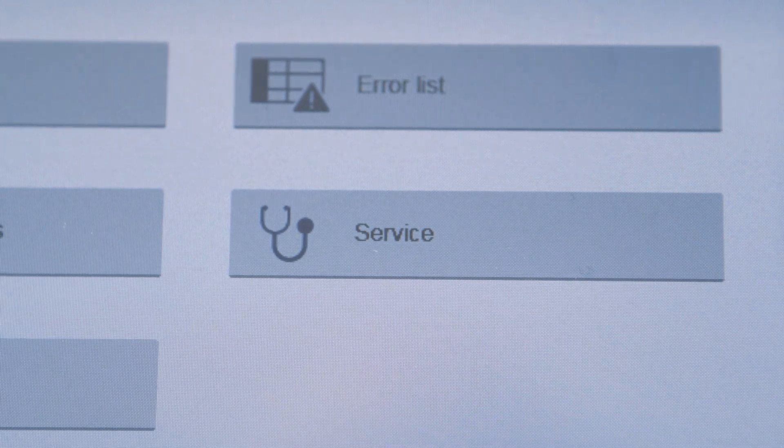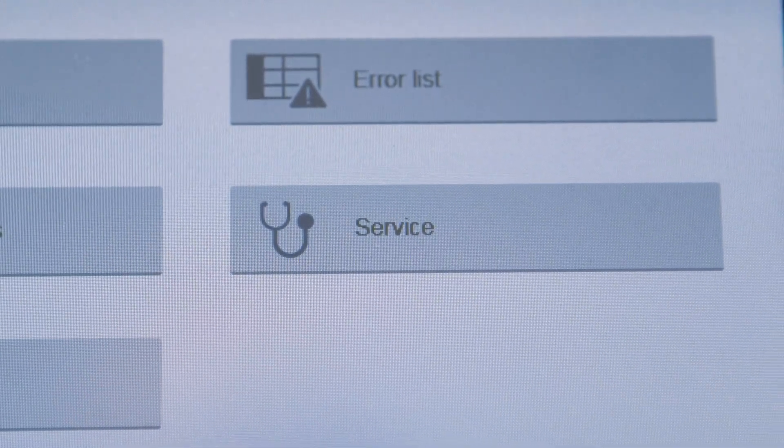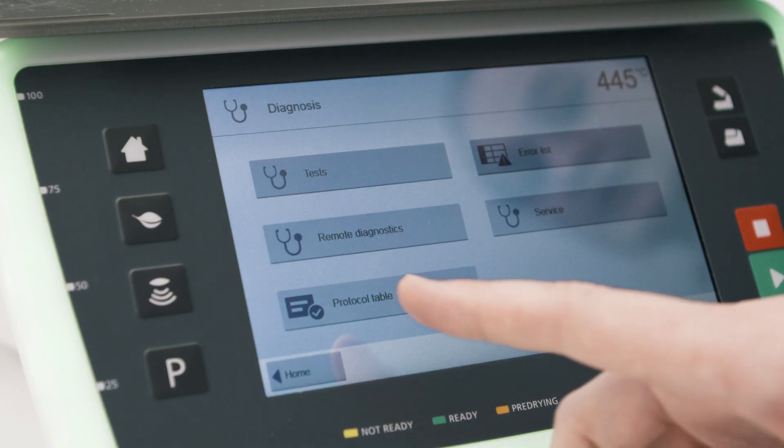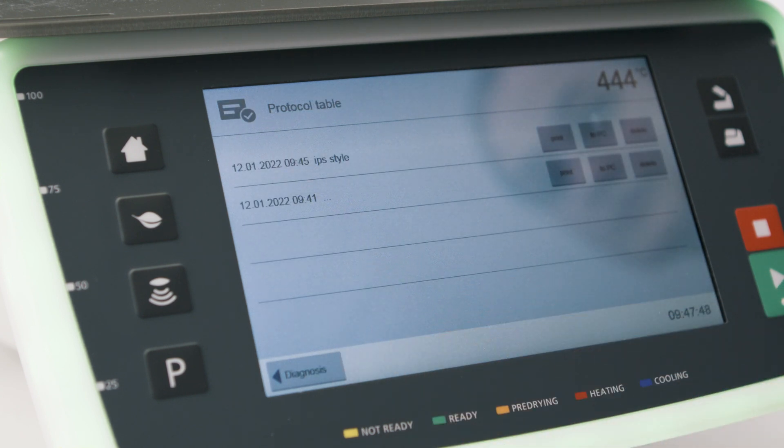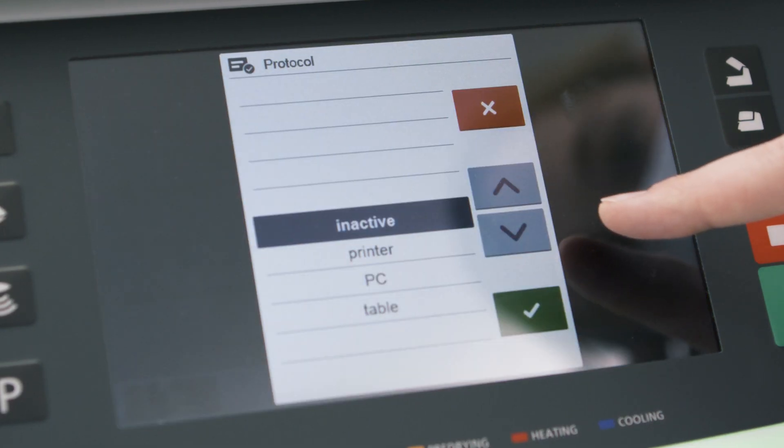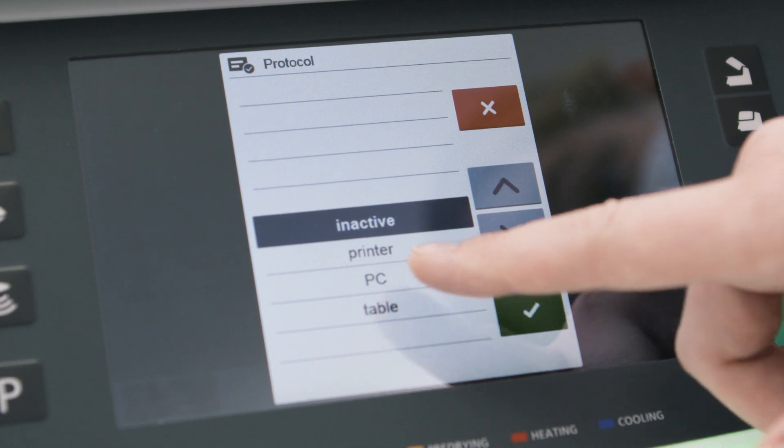The service button can only be used by the after-sales service. In the protocol table, you can view the last firing cycles. You can print or send this information to a computer. However, this function is only available if it has been activated previously in the settings menu.